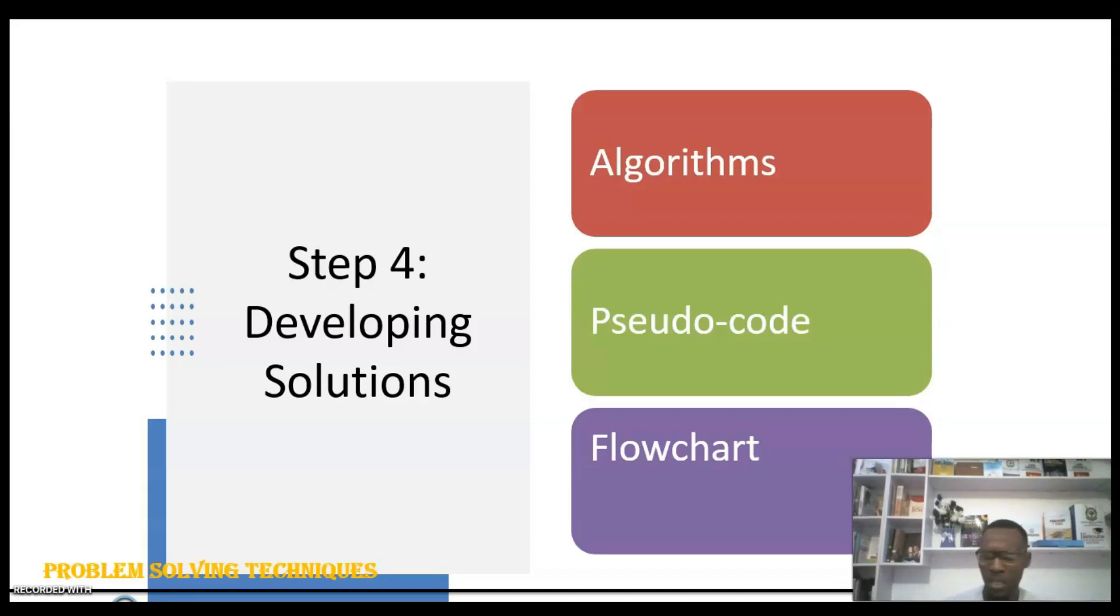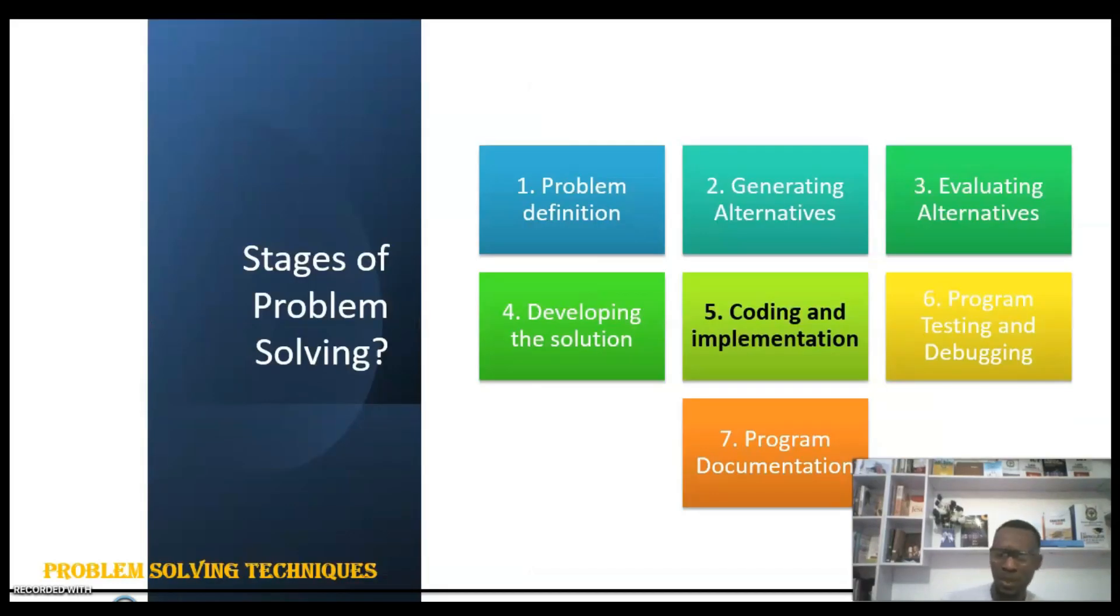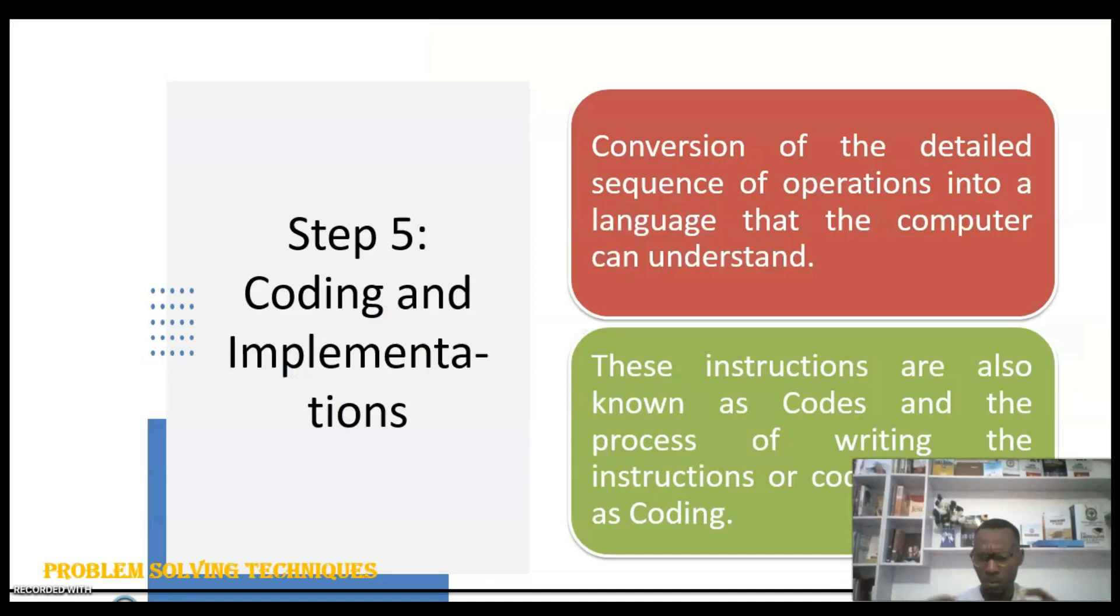Having done that, the next thing is coding and implementation. You agree with me that when an architect has finished designing a building plan, the next is that we'll give it to a civil engineer who will convert that plan into a real building. That is the way it is also. Having outlined our algorithm on how to solve our problem, we'll be considering how to use programming tools, programming languages, to implement those algorithms and flowcharts into real code.